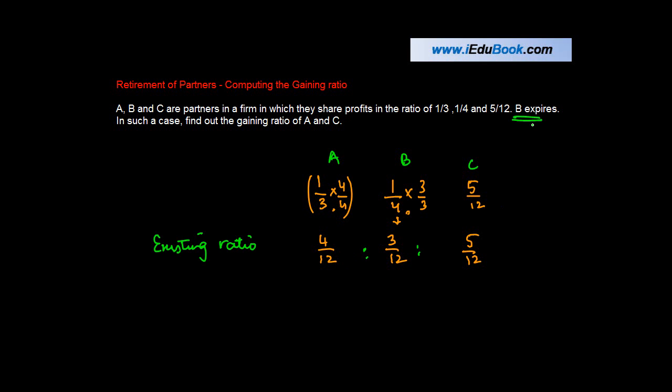B expires. In that case, what will happen? We saw in the previous video, if you haven't had a chance to go through it please do, that if a partner moves out whether by way of retirement or due to death, his share is distributed amongst the old partners in their existing ratio.